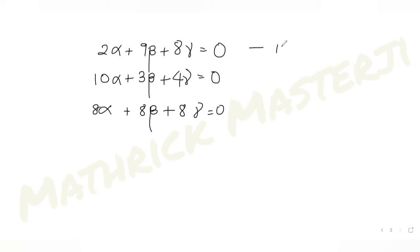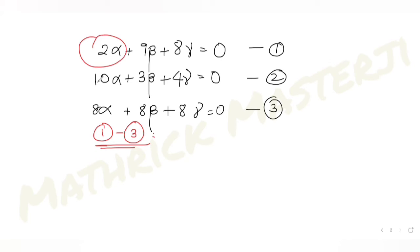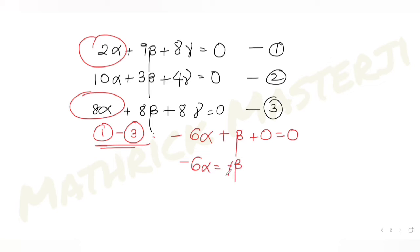Now with these three equations, to find alpha, beta, and gamma, I'll do equation 1 minus equation 3. That gives (2 - 8)α + (9 - 8)β + (8 - 8)γ = 0, which simplifies to -6α + β = 0. So from here, β = 6α.